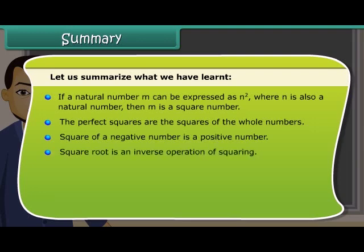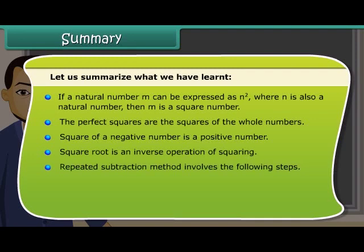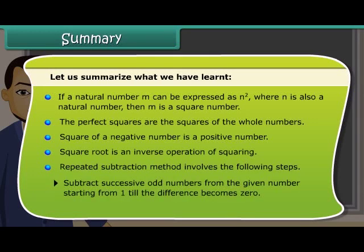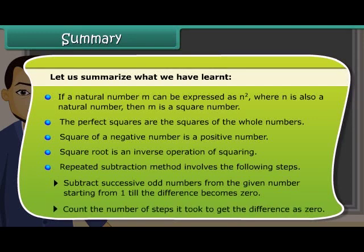Repeated subtraction method involves the following steps: subtract successive odd numbers from the given number starting from 1 till the difference becomes 0. Count the number of steps it took to get the difference as 0.